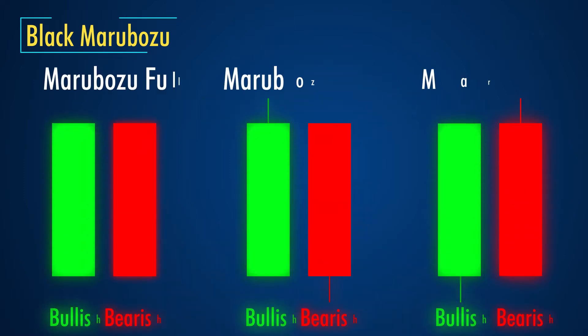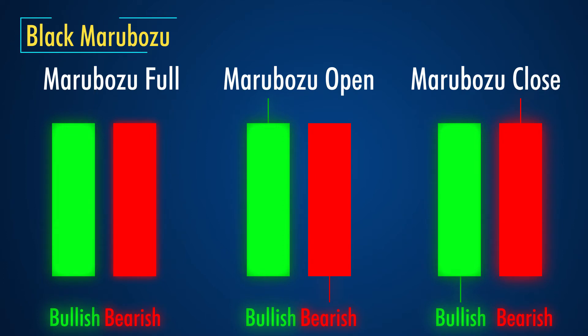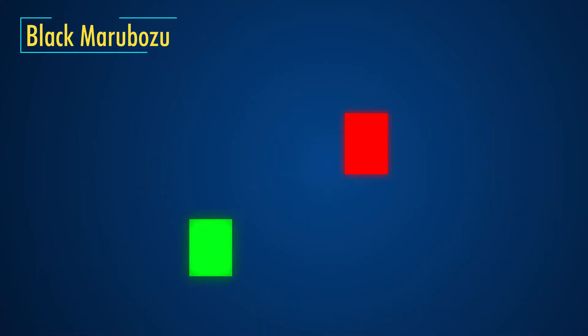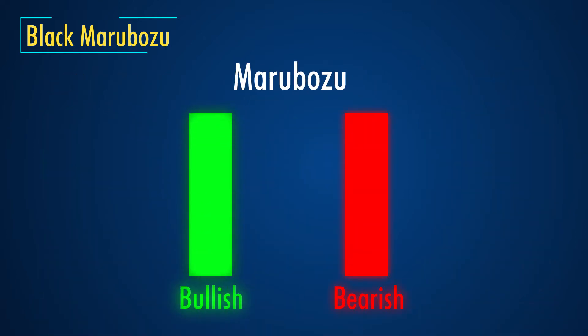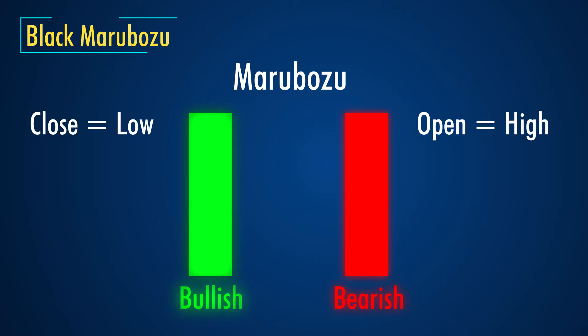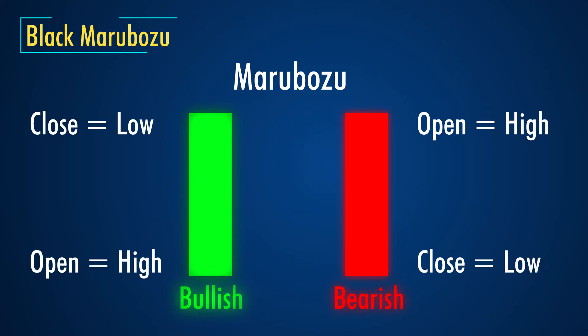The term Marubozo pattern can be translated into Japanese as 'close cropped' or 'shaven head.' It is a type of candlestick pattern which has no upper or lower shadow. In a bearish — that is, red or black — Marubozo candlestick pattern, the opening and the high price are the same, where the closing occurs at the close of the day. In simple terms, the day's low is formed at the closing price itself and the day's high is formed at the opening price.